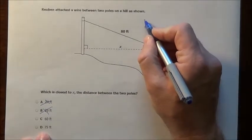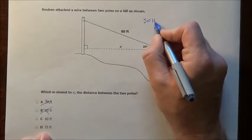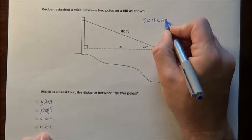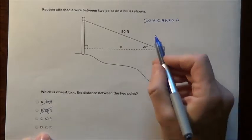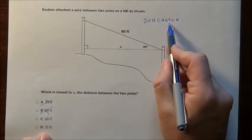That's when I know I'm going to have to use the thing that we've been taught: some old hippie called another hippie tripping on acid. So this helps us remember sine, cosine, tangent.